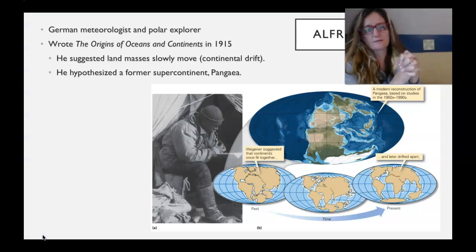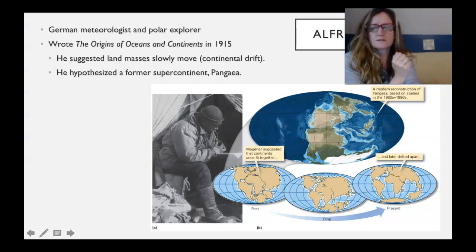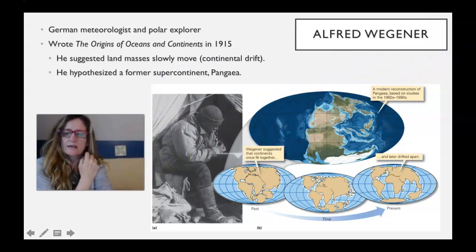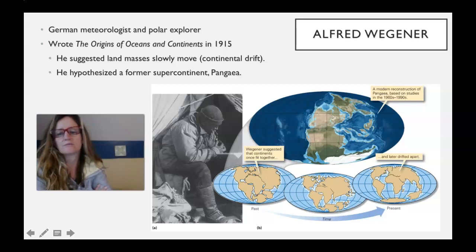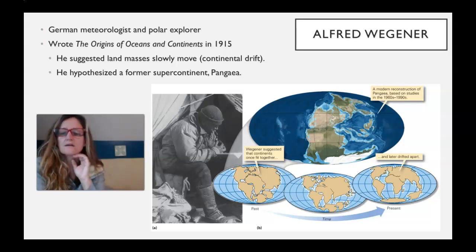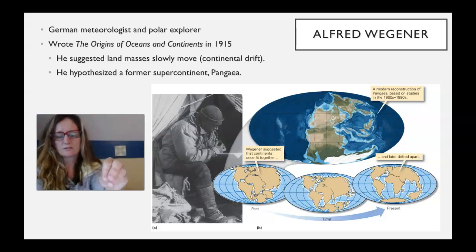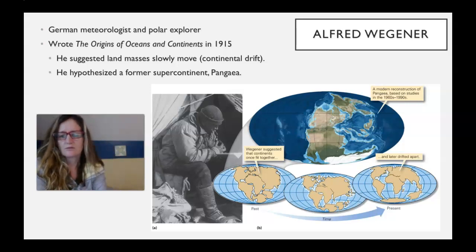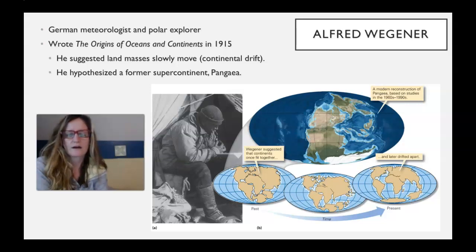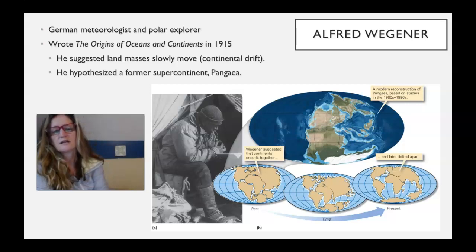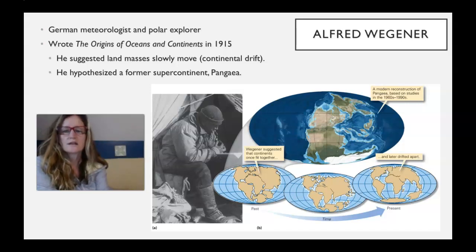We'll start by talking about Alfred Wegener, a German meteorologist. He died when he was 50, and before his untimely death he did lots of expeditions to Greenland and up into the Arctic. He actually died in Greenland on an expedition on his way to provide food for another expedition. He wrote a book in 1915 — The Origins of Oceans and Continents.